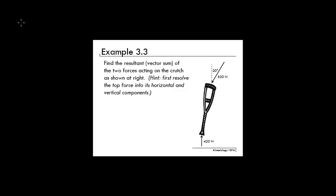This is example 3.3. The example reads: find the resultant vector sum of the two forces acting on the crutch as shown at right. Hint: first resolve the top force into its horizontal and vertical components.